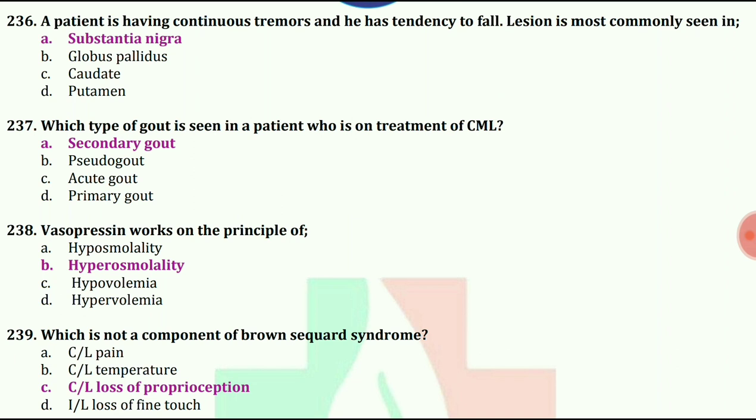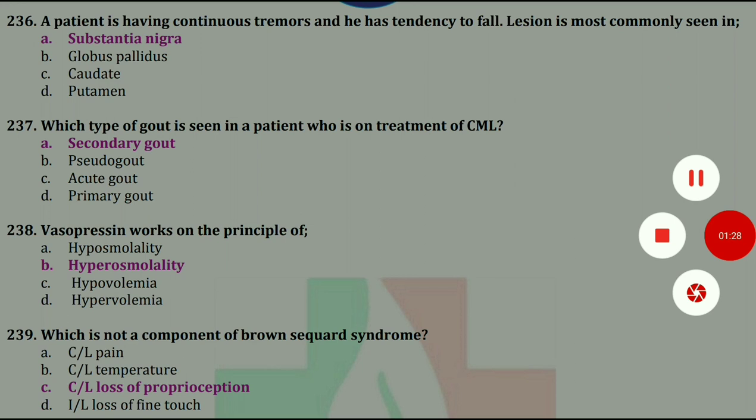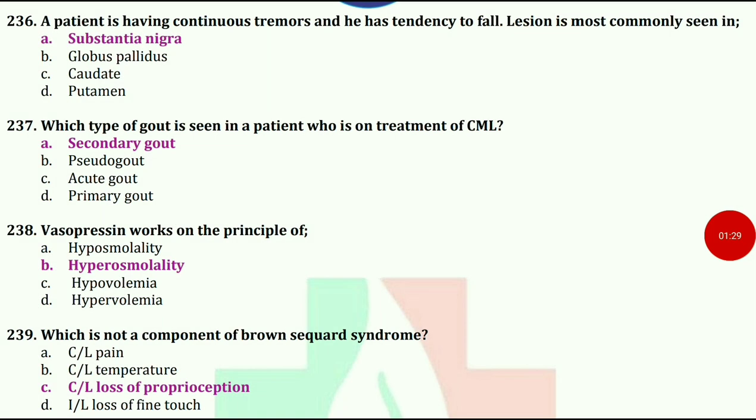Which is not a component of Brown-Séquard syndrome? The answer is loss of proprioception on contralateral side.